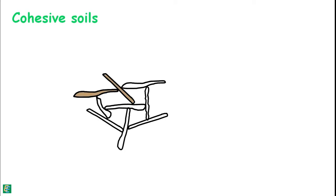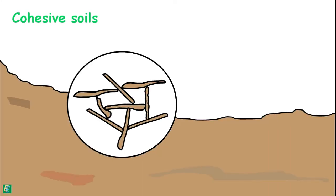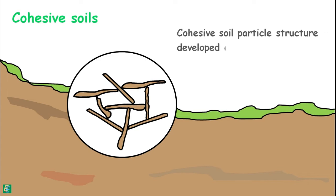Cohesive soils have a certain particle structure in their natural state of occurrence that was developed during the original process of soil formation.